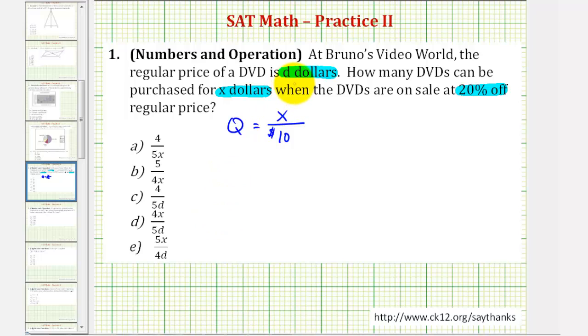So if the DVDs normally cost D dollars but they're 20% off, that means we still have to pay eighty percent. So we want to find eighty percent of D dollars which would be equal to zero point eight times D or just zero point eight D.